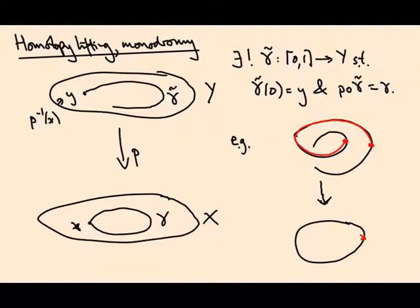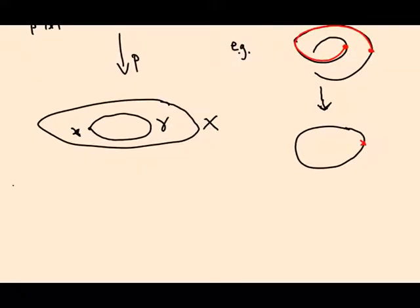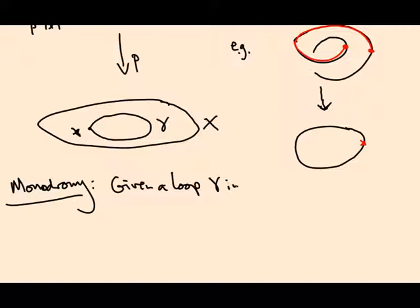So the monodromy, let me remind you, I gave you a kind of intuitive definition of it earlier. Given a loop gamma in X based at little x...